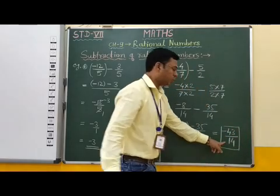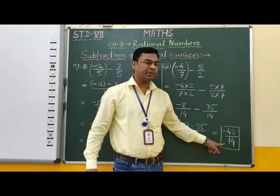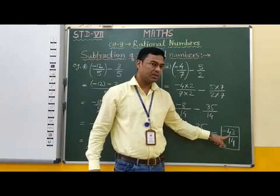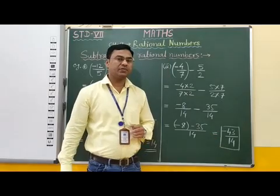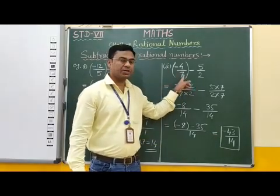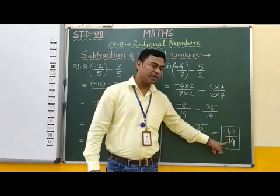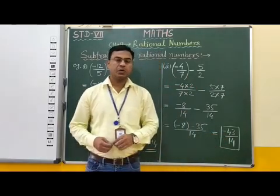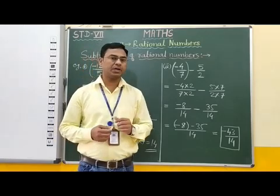Here, both the numerator and denominator are not divisible by the same number. Therefore the answer is minus 43 by 14. Students, in this way, we can subtract any given two rational numbers.